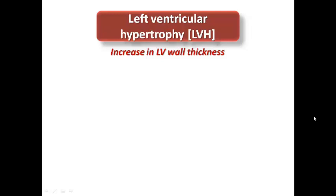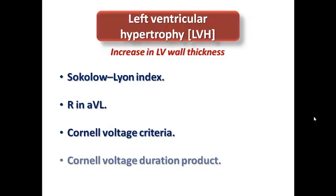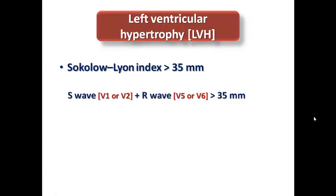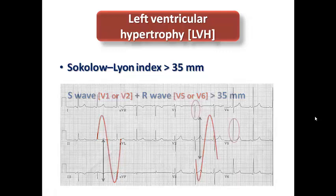Left ventricular hypertrophy is defined as an increase in LV wall thickness. There are several ECG features to diagnose it. The first is the Sokolov-Lyon index, which depends on the sum of the S-wave in V1 or V2 plus the R-wave in V5 or V6. If the sum is more than 35 mm, this is the cut-off point for diagnosing left ventricular hypertrophy on ECG.